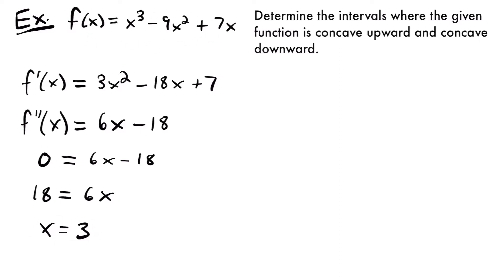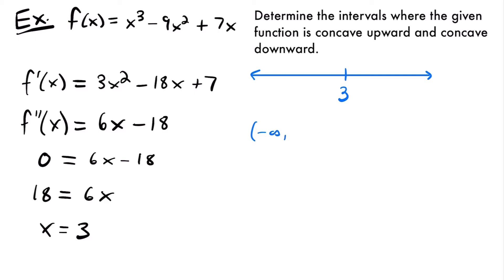If we draw a number line and label the point we found of 3, then we're going to have two intervals: from negative infinity all the way up to 3, and then all the values from 3 to infinity. So our two intervals are negative infinity to 3, and then from 3 to infinity.